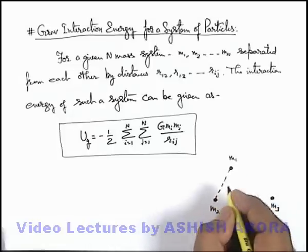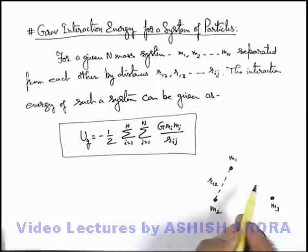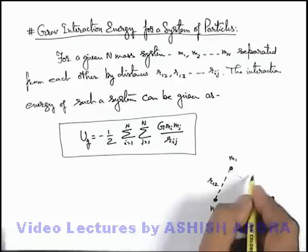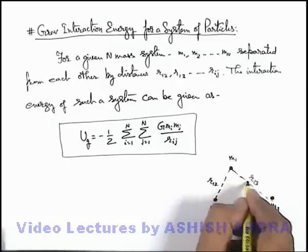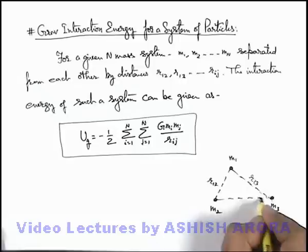And they are having separation r12 between particles 1 and 2. This is r13 between particles 1 and 3, and r23 between particles m2 and m3.